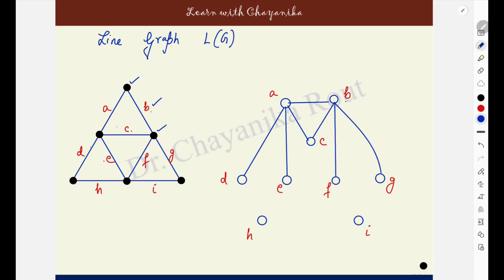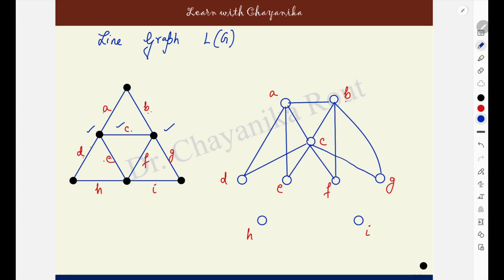Next, come to edge C. C has two end points. It is sharing its end points with A, D, E, B, F and G. The vertex C here has to be made adjacent to A, B, D, E, F and G. A and B are already done. Make it adjacent to D, E, F and G.